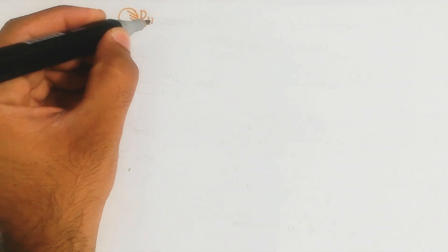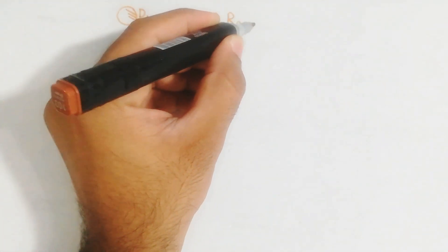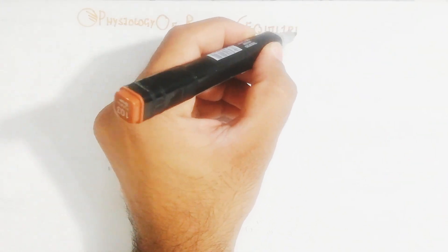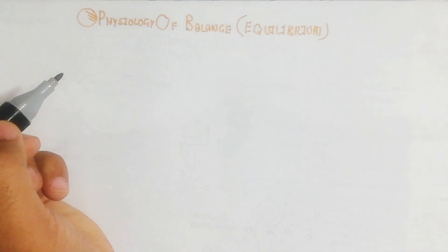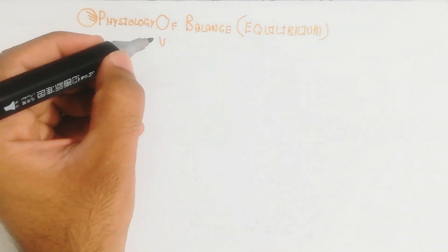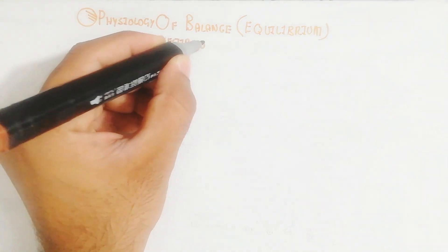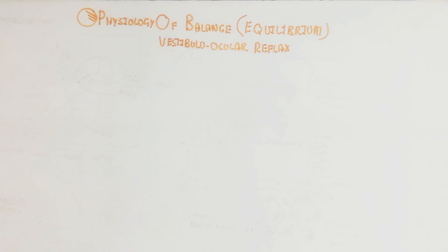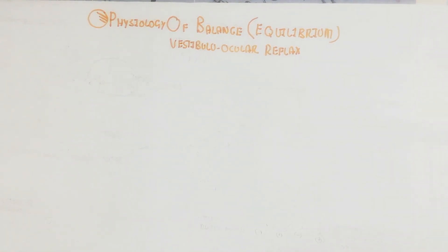Hello, assalamu alaikum. In this video we will understand about the physiology of balance — how our body can be balanced. We will understand about the vestibulo-ocular reflex and the vestibulo-spinal reflex, and how our body and head can maintain their posture.